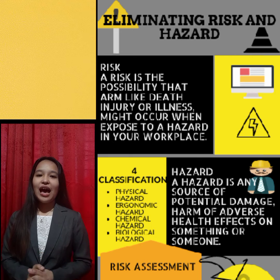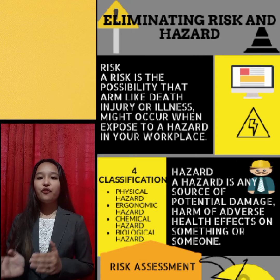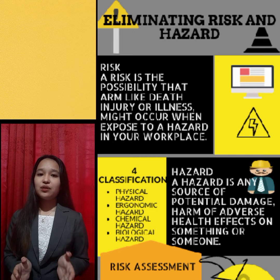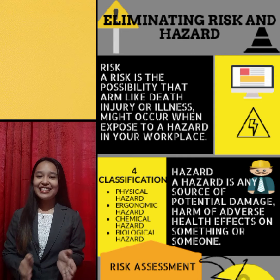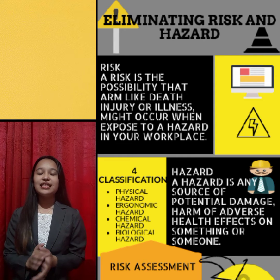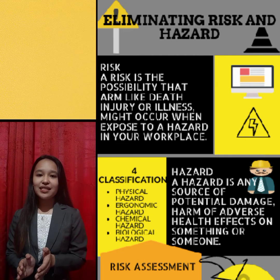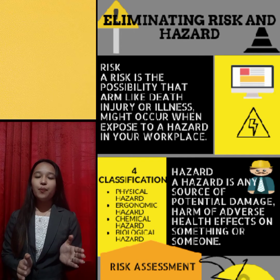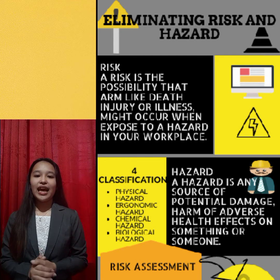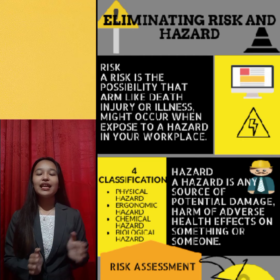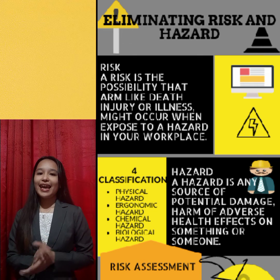Ergonomic hazards — it is a physical factor that can affect musculoskeletal systems, such as repetitive movement, manual handling, and poor body positioning. Next is chemical hazards — any hazardous substance that can harm your employees, like paint, cleaning products, heavy metals such as lead, mercury, cadmium, and aluminum. And last is biological hazard — bacteria or viruses that can cause health effects like Hepatitis A or B, even HIV and AIDS.